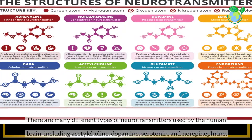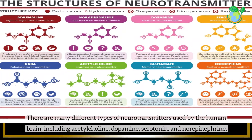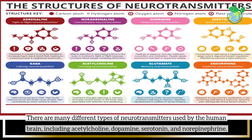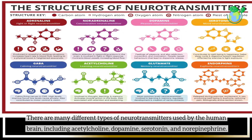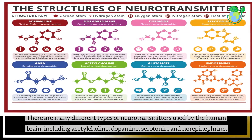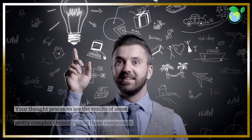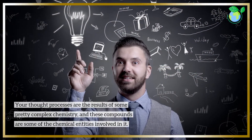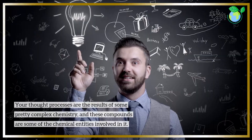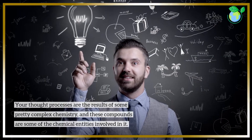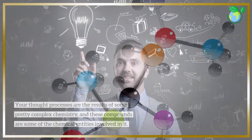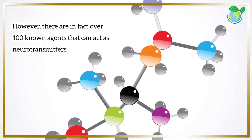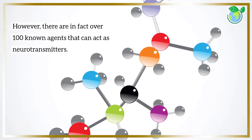There are many different types of neurotransmitters used by the human brain, including acetylcholine, dopamine, serotonin, and norepinephrine. Your thought processes are the results of some pretty complex chemistry, and these compounds are some of the chemical entities involved in it. However, there are in fact over 100 known agents that can act as neurotransmitters.